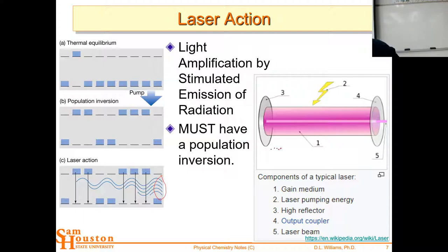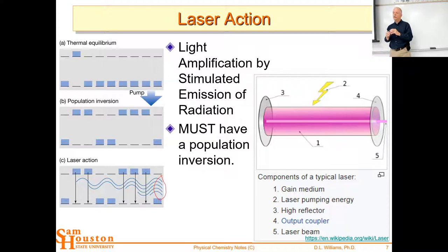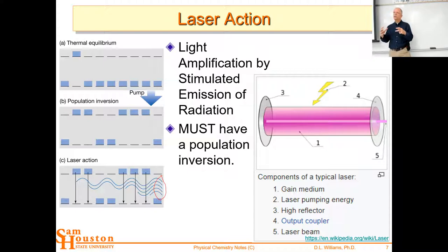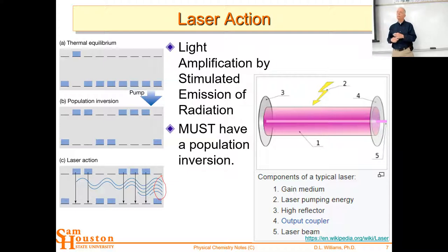Practically speaking, to engineer one of these you need a gain medium - the material that produces the laser. For common lasers there's the neodymium atom, which has an energy level structure that allows it to lase. You grow a garnet crystal structure with yttrium and aluminum - like the gemstone garnet - and dope in a certain percentage of neodymium. This is a neodymium-doped yttrium aluminum garnet crystal, grown as a perfect crystal, cut into rods, and placed in the gain medium.